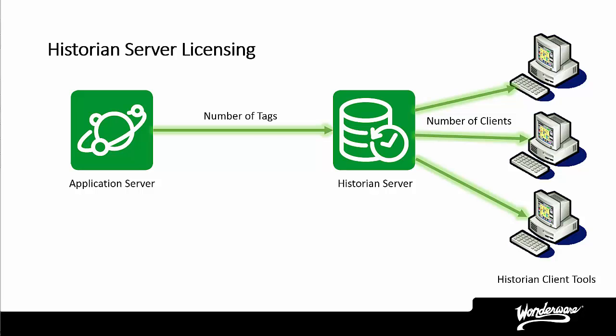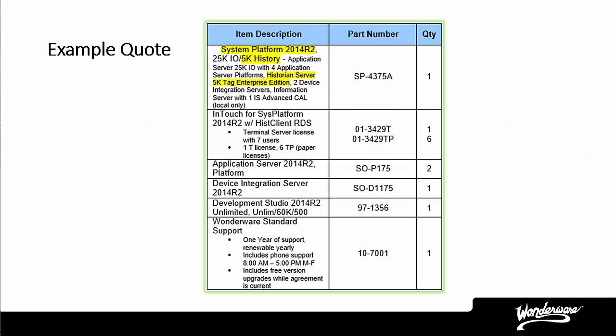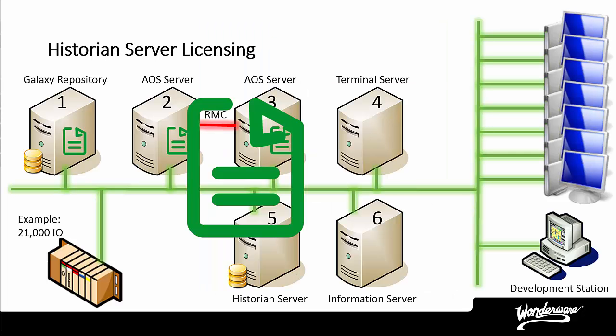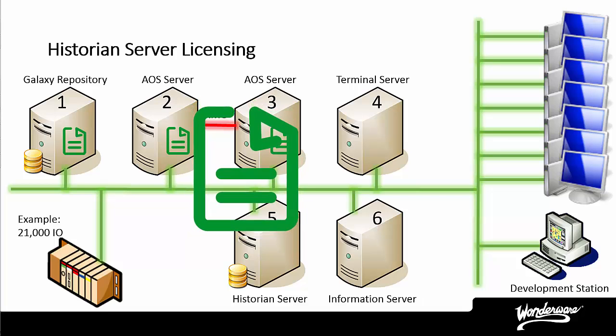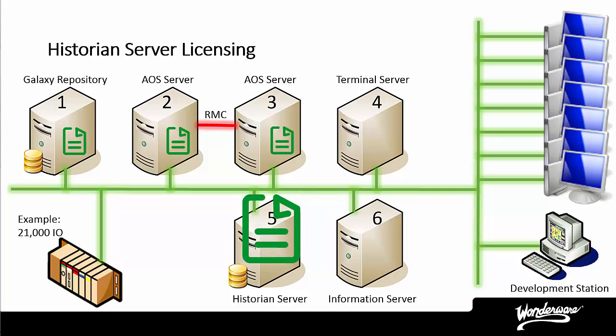Let's go back to the example quote. You can see that the System Platform license comes with a Historian Server license for a given number of history tags — in this case, 5,000. The Wonderware Historian client software product is one way to gain access to the data in the Historian, and access is licensed by the people and devices that connect. The license for the Wonderware Historian goes on the actual computer that is running the software.